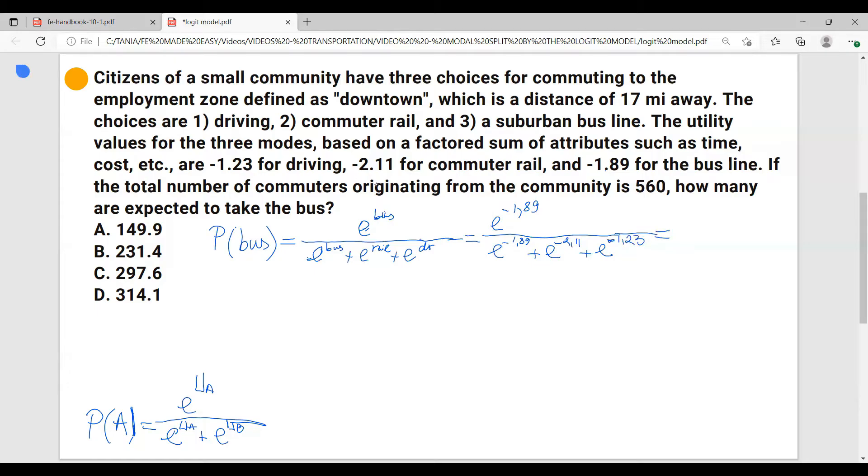And let's calculate that using the calculator. And we get 0.2675, we'll round it out to 0.268. And this is the percentage of people that will take the bus. And now, moving forward, in order to calculate how many people will actually take the bus, we take the entire amount of people, 560, multiplied by 0.268. And this equals to 149.9.